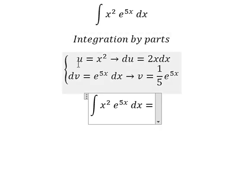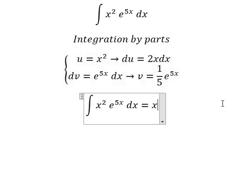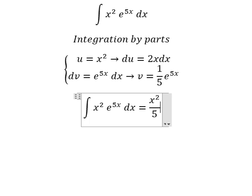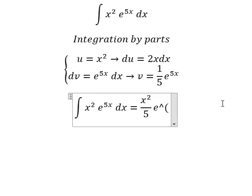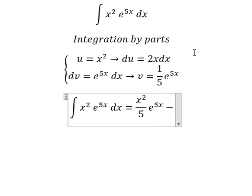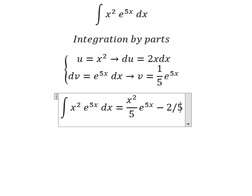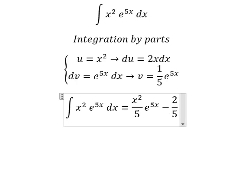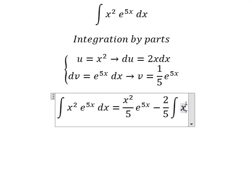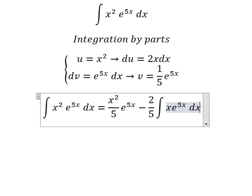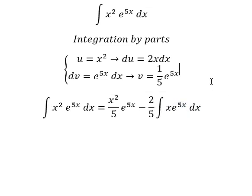So we have u multiplied by v minus u prime multiplied by v. We have 2 with 1 over 5, so we have 2 over 5, and we have the integration x e to the power of 5x dx. Now we can use another integration by parts again.